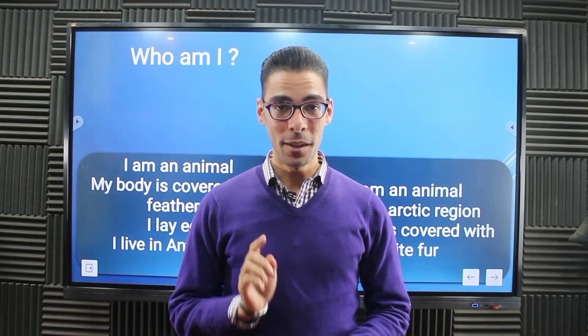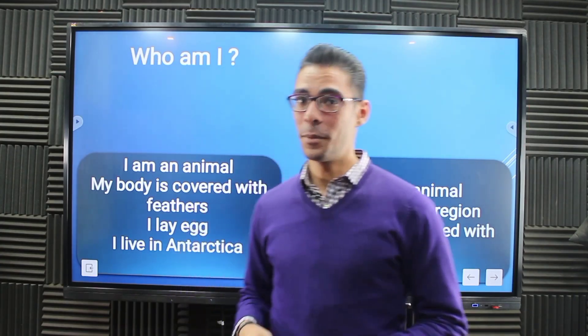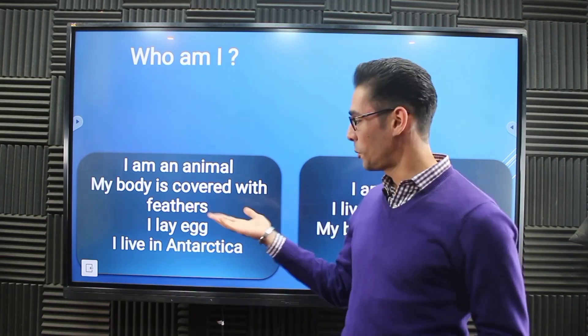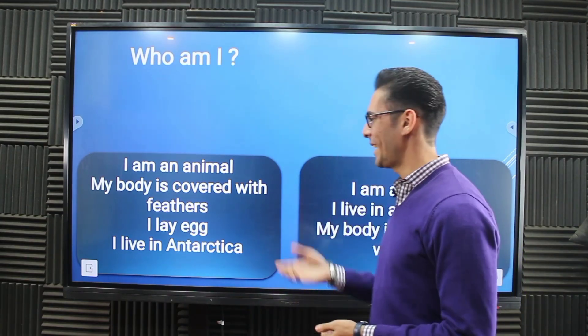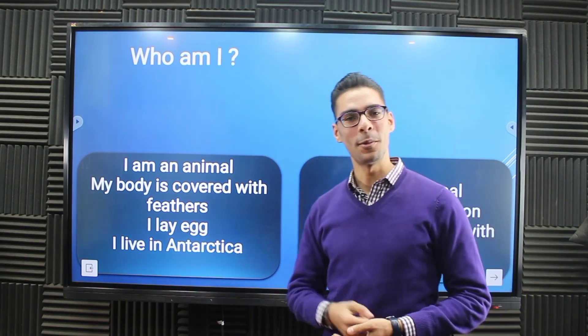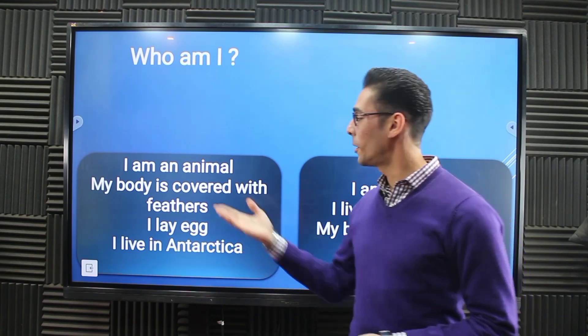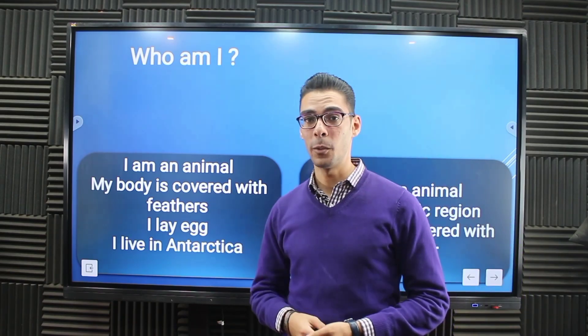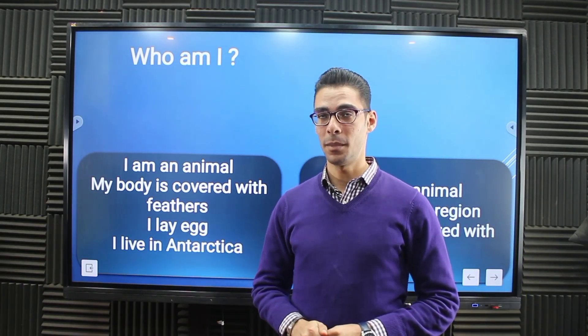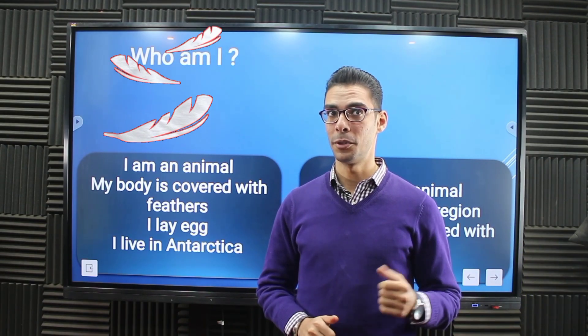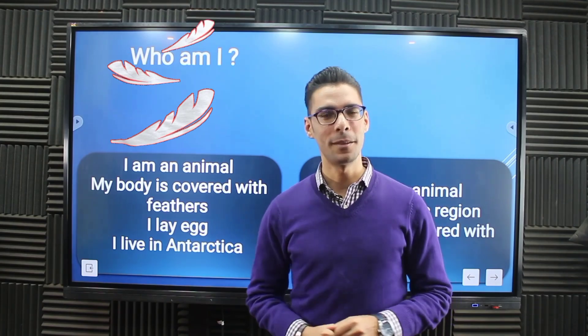I need to take you on a trip around the world to visit your favorite animal. But we need to get started by solving two questions — consider them a clue. Here's the first one: I'm an animal, my body is covered with feathers. Feathers means bird — keep it in mind.